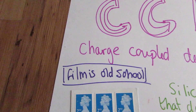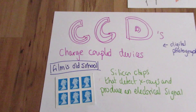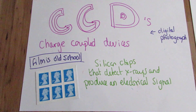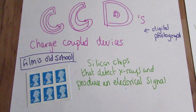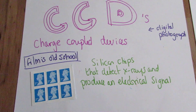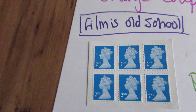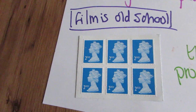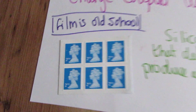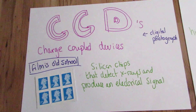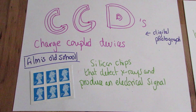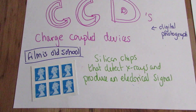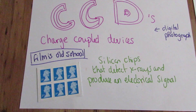Film is pretty old school. Today we use CCDs, which are charge couple devices. These are used in digital photography and are about the size of a postage stamp. These are silicon chips that detect x-rays and produce an electrical signal which they send to a computer.